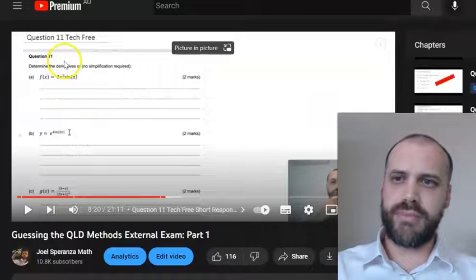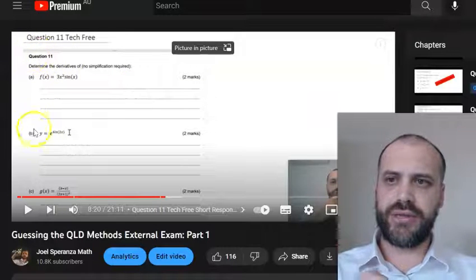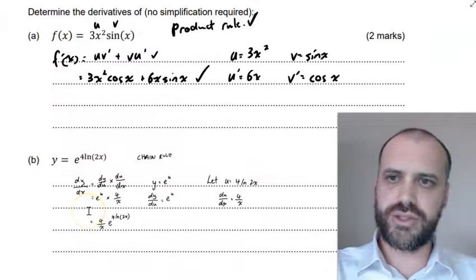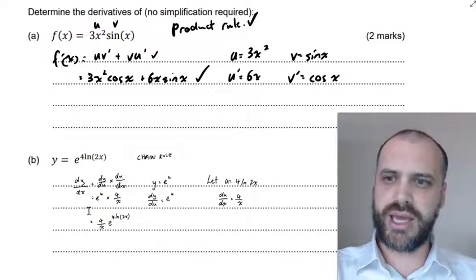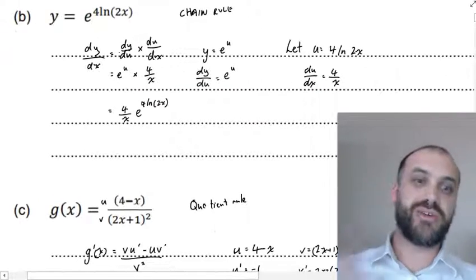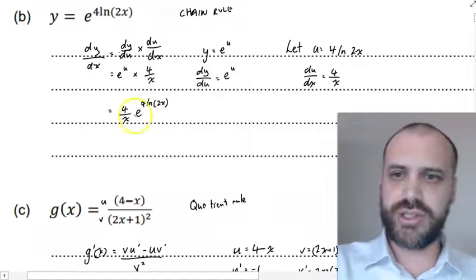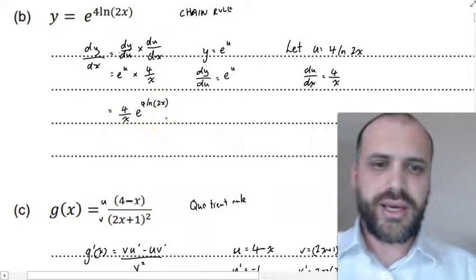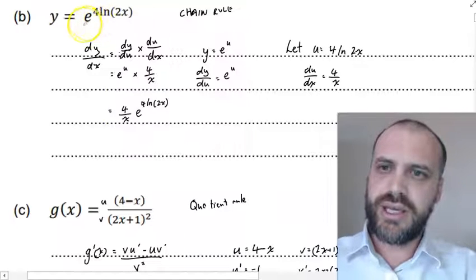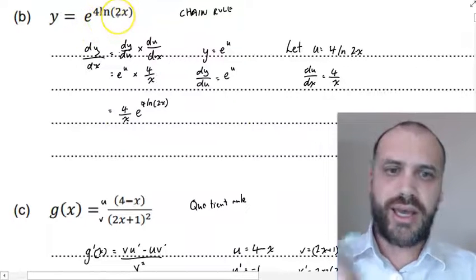Probably the biggest mistake I made was in question 11b right here. The question is asking us to determine derivatives and I went from a down to b and I very confidently just started using the chain rule and came to this horrible answer here.